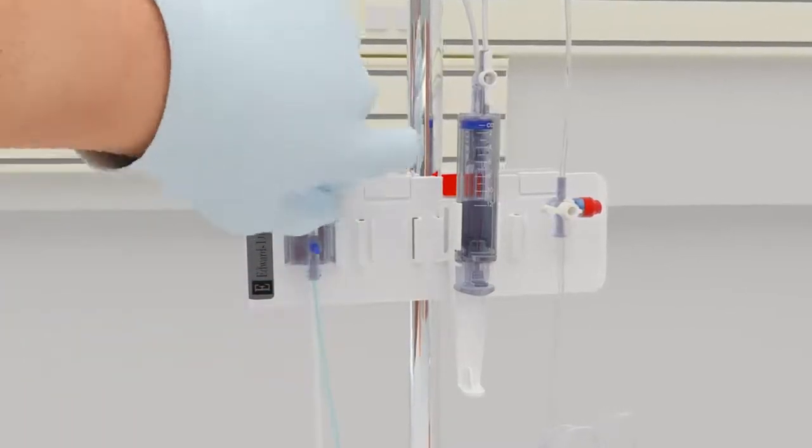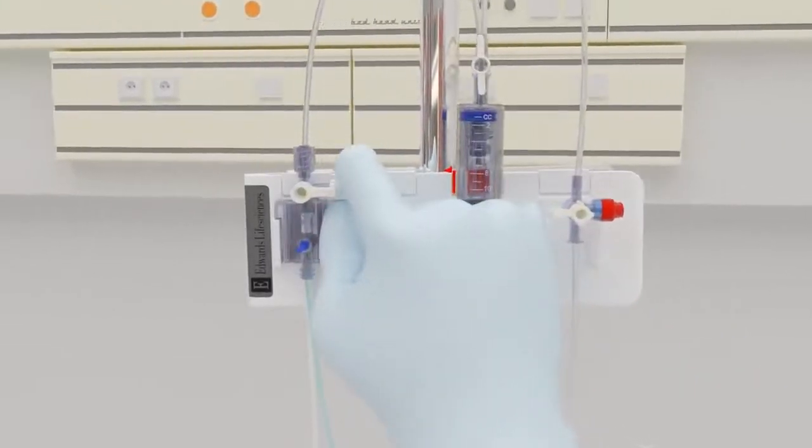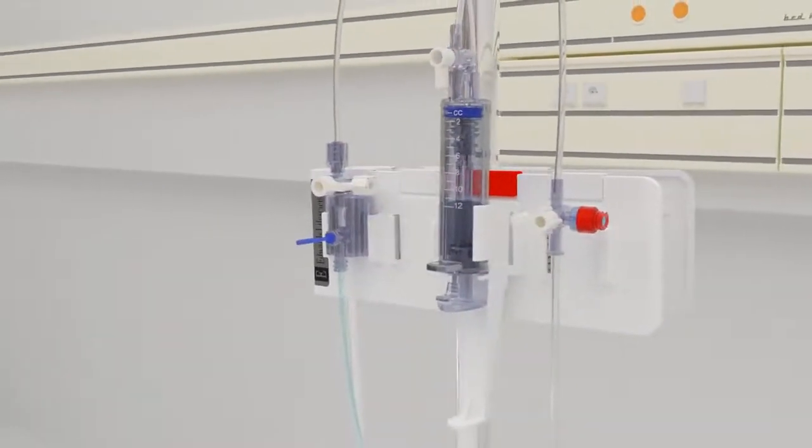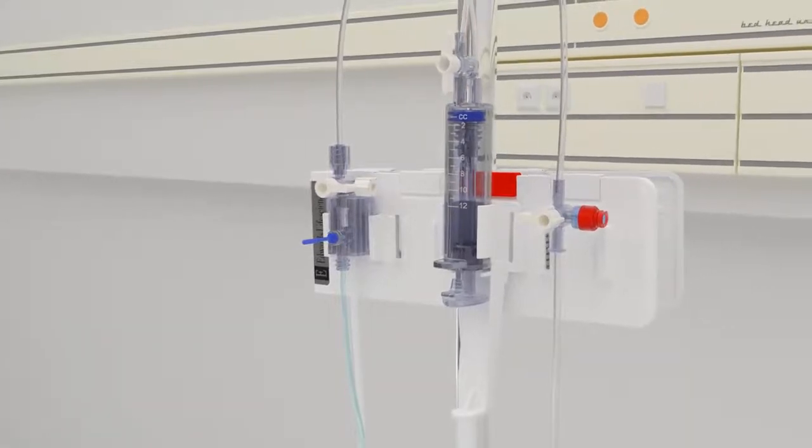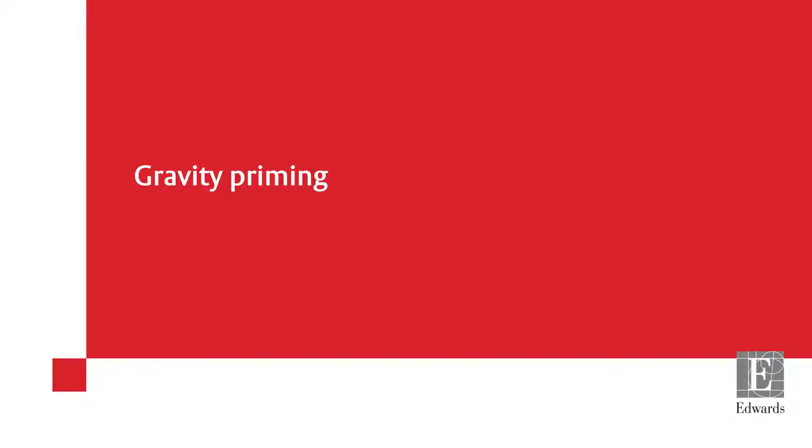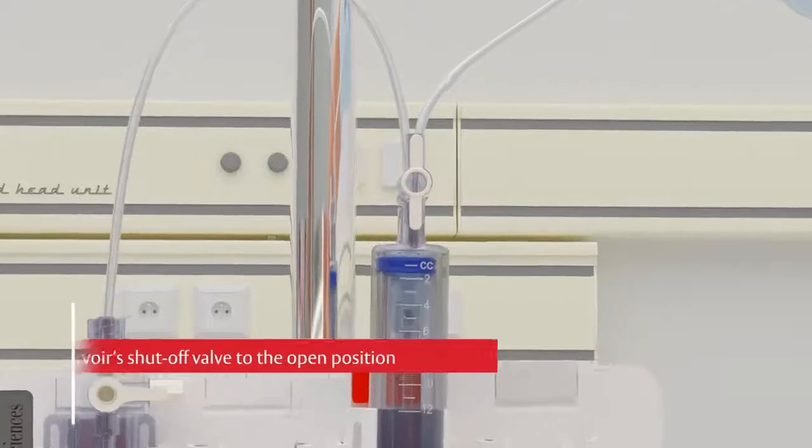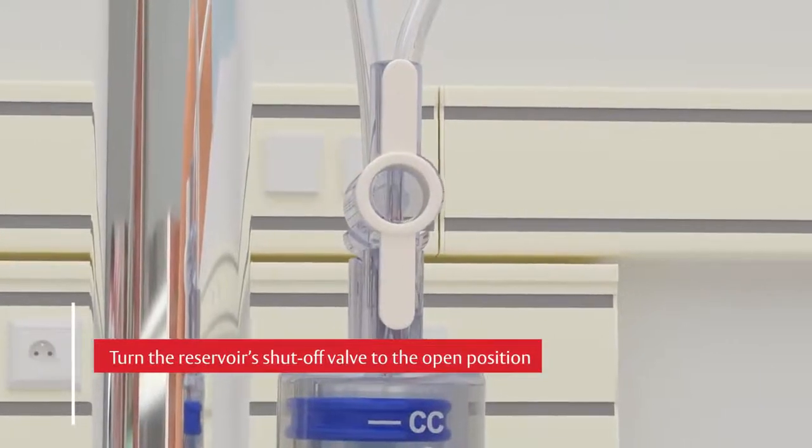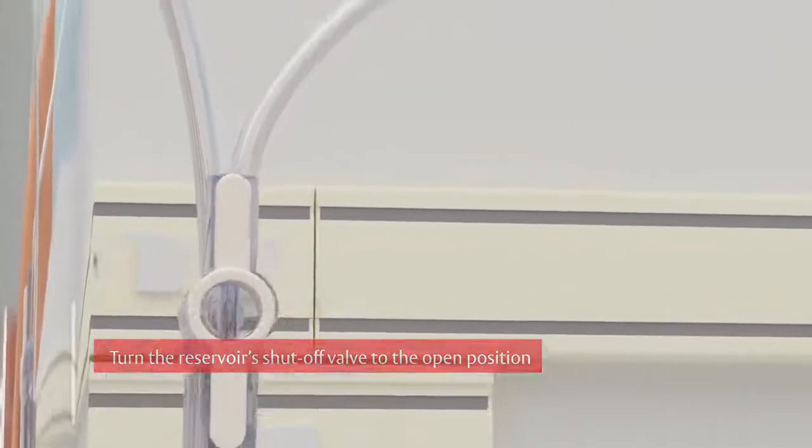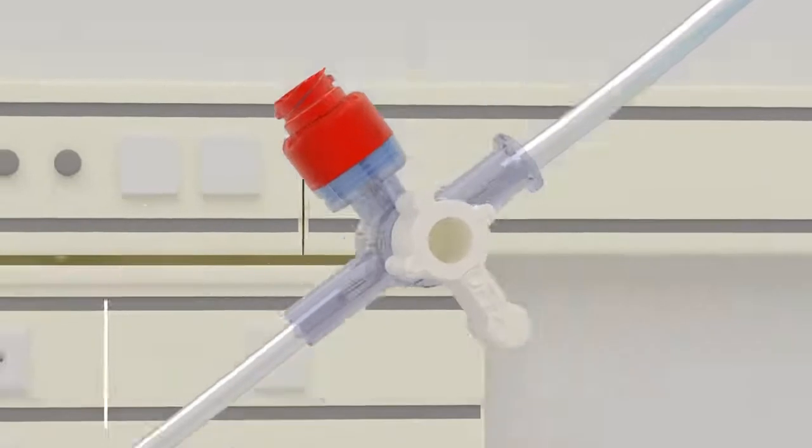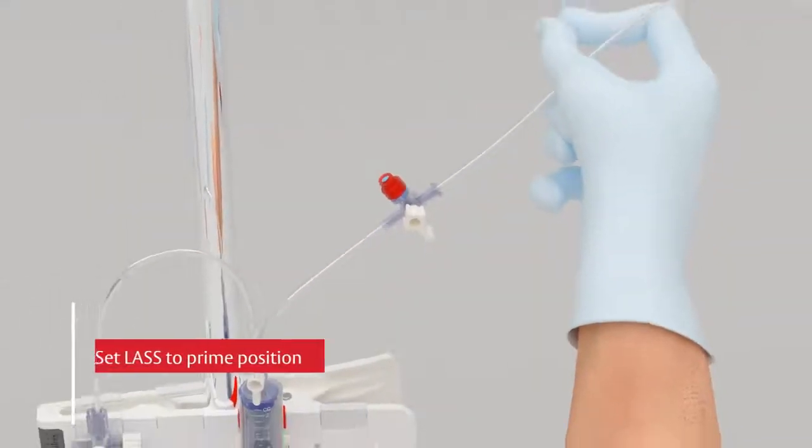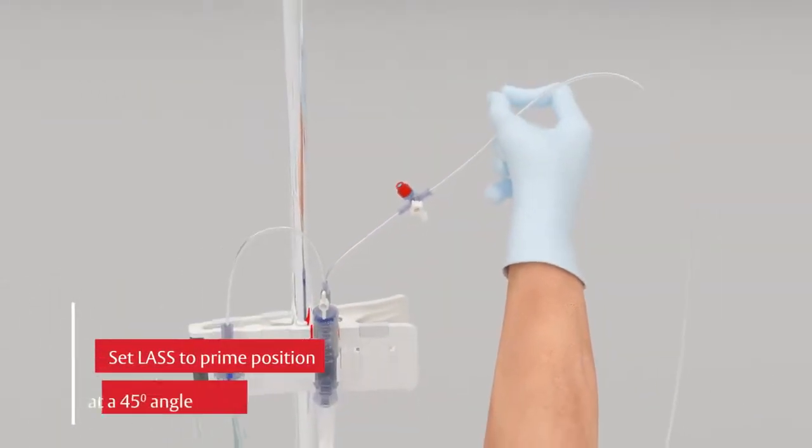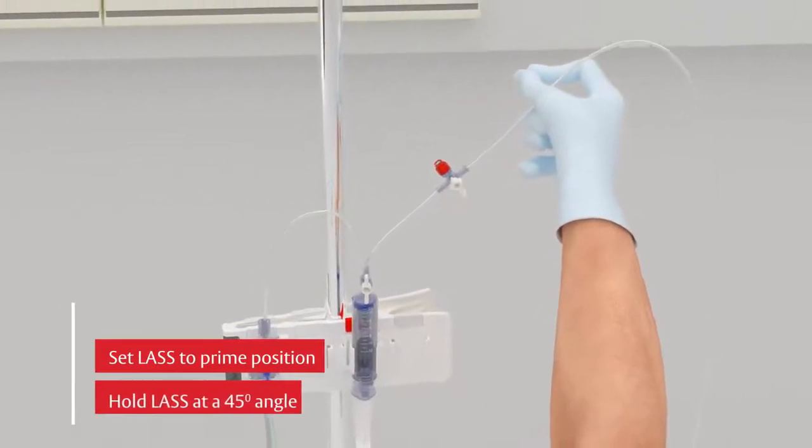Replace all vented caps on the side ports of the stopcocks with non-vented caps. Next, with the shutoff valve in the open position, which is parallel to the tubing, verify that the sampling site is set to the prime clear position and hold it above the reservoir at an approximate 45 degree angle.